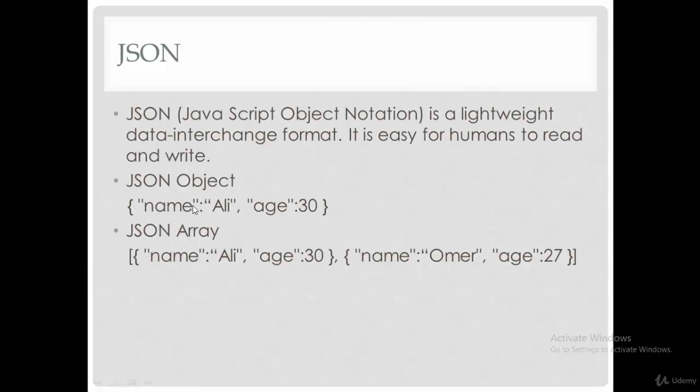The attributes are name and age. The value of the name is Ali while the value of the age is 30. So this is called a JSON object. You can imagine the name as a column in a table and Ali as data inside this table.